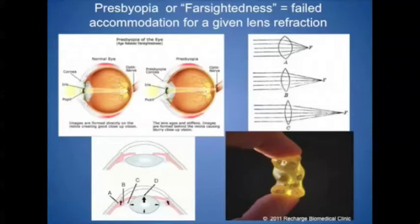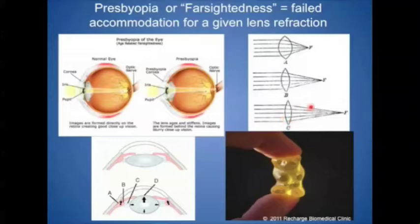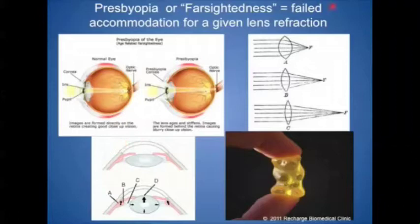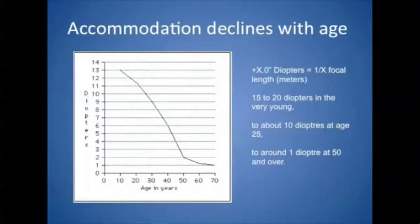Presbyopia, or farsightedness — it's not really that you can see far, it's just that you can't see close. So these old terms are kind of unhelpful. But presbyopia, meaning old person's vision, is a failed accommodation. So what is accommodation? Accommodation is when you take the lens and you release these strings. There's a circular muscle surrounding the lens, and when it contracts, the circle gets smaller, and like a gummy bear that's not stale, it'll get rounder and more refractive. So as your lens gets older, it becomes less like a gummy bear and more just like a stale candy.